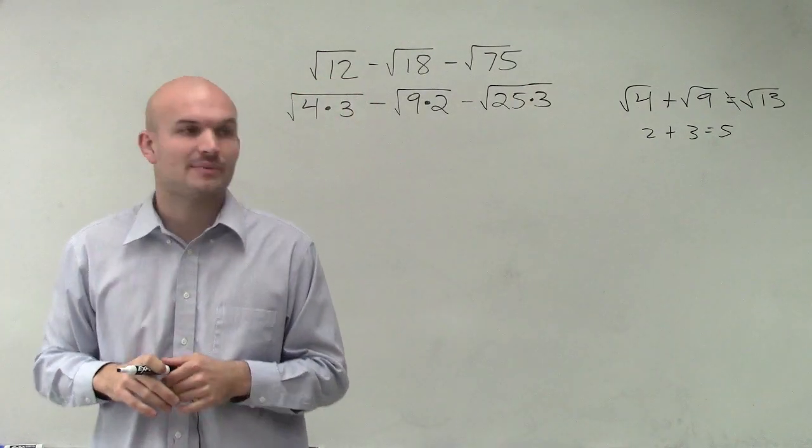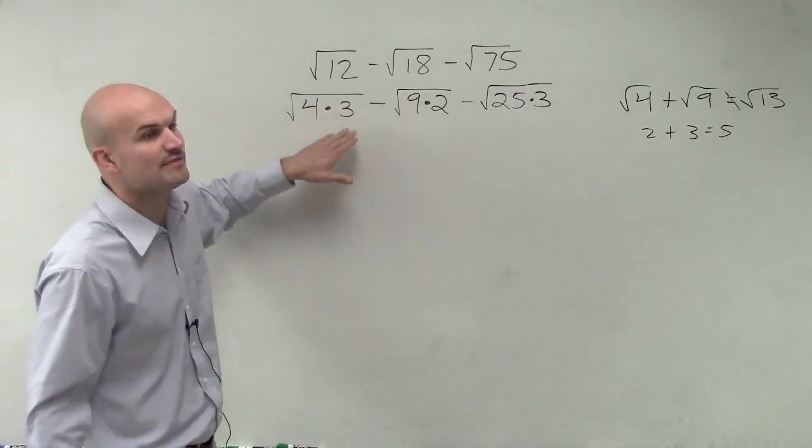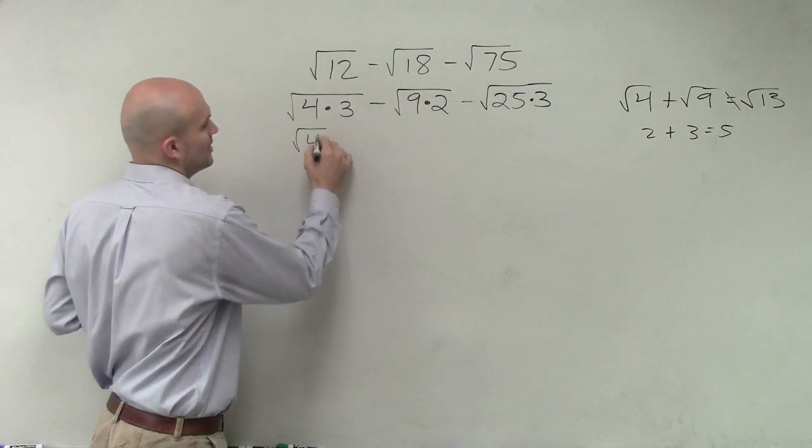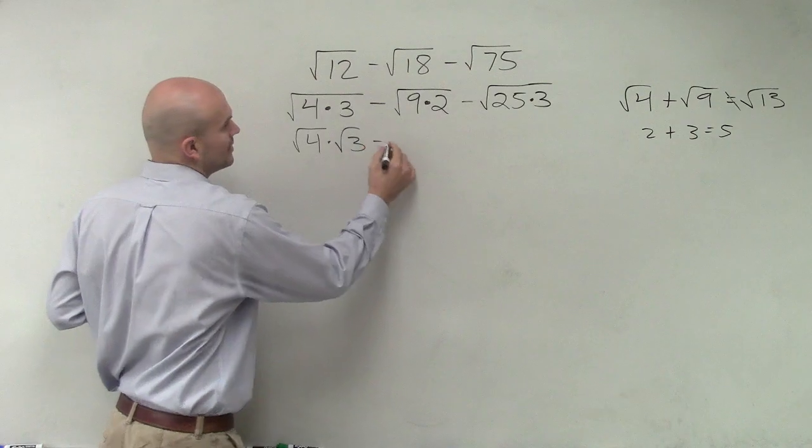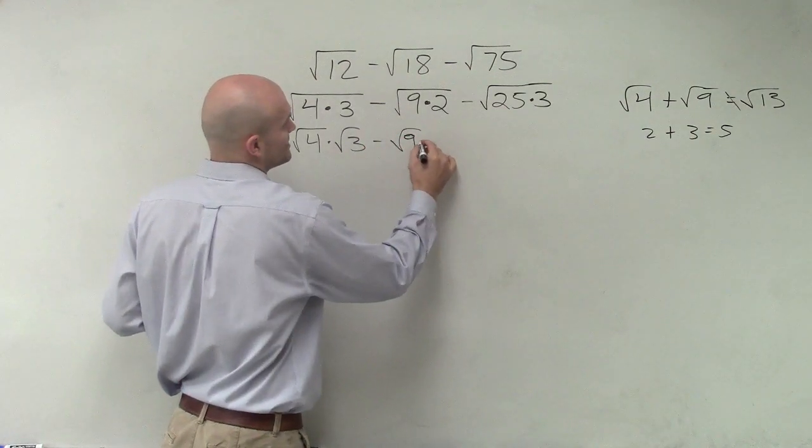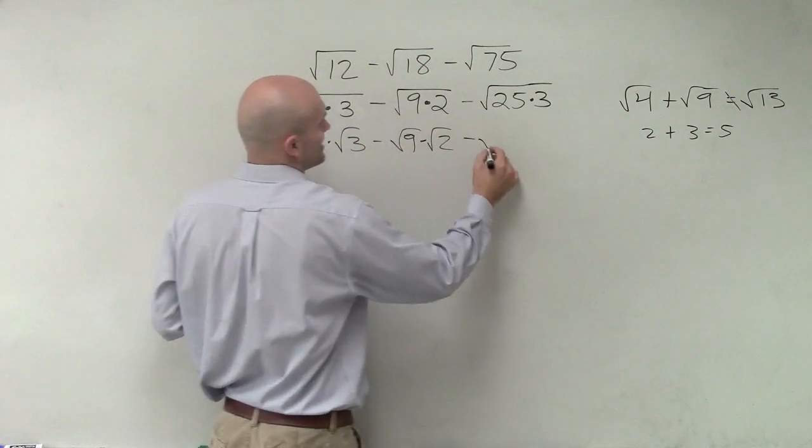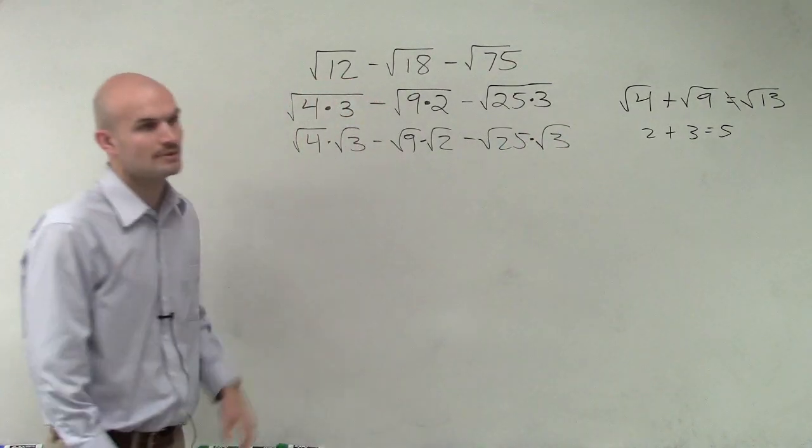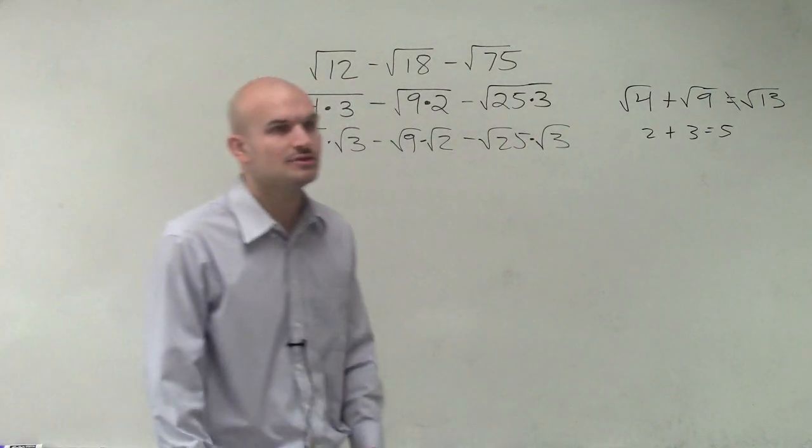Do you guys remember the multiplication property of radicals states that when you have the product of a radical, you can now break it up into the square root of 4 times the square root of 3 minus the square root of 9 times the square root of 2 minus the square root of 25 times the square root of 3. That allows you to do that.